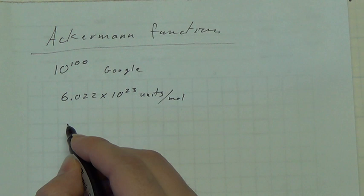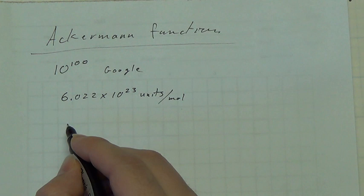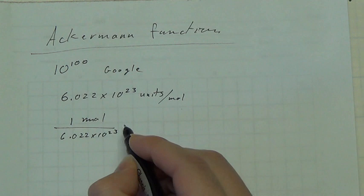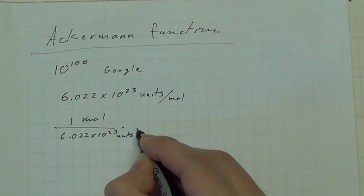So let's see how many moles are in a Google. There are 1 mole is 6.022 times 10 to the 23rd. And units.